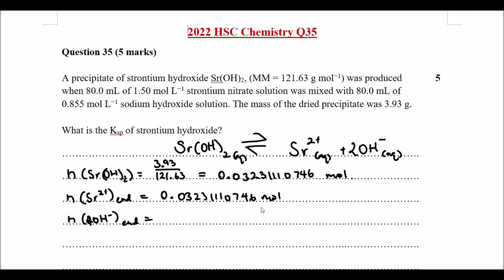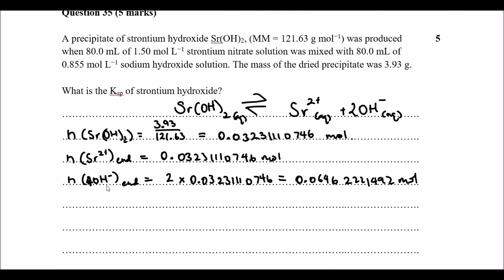And for our hydroxide at the end, it would be the multiple of this value here. So I just times it by 2, by the number above, and I get a value of 0.06462221492. So that was the number of moles of strontium and hydroxide used to form the precipitate at the end.